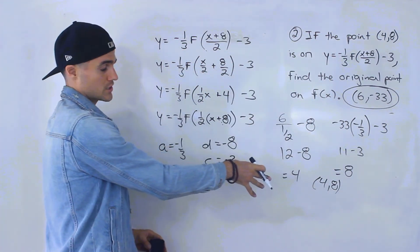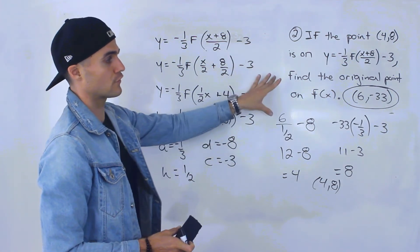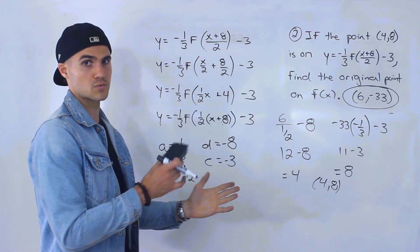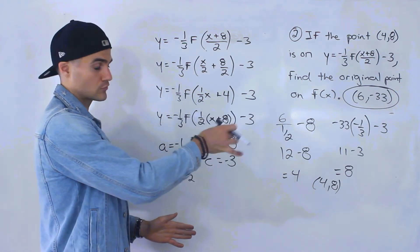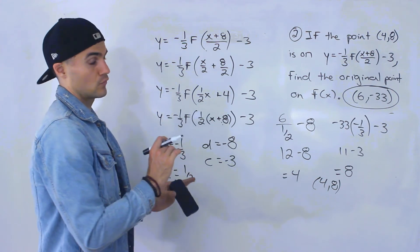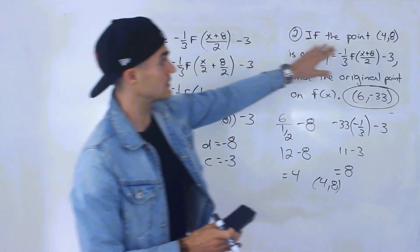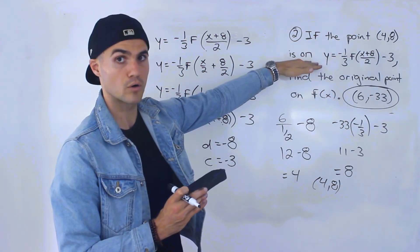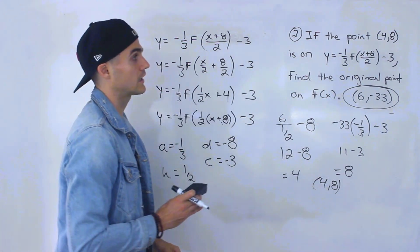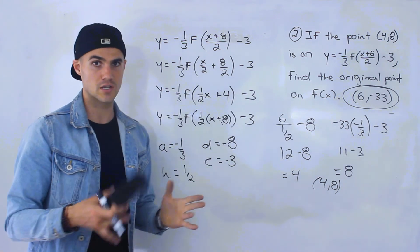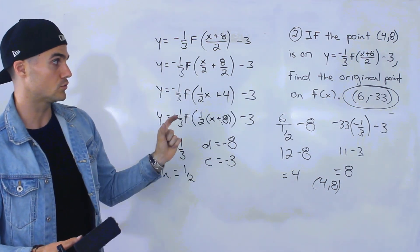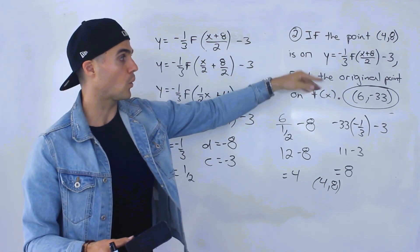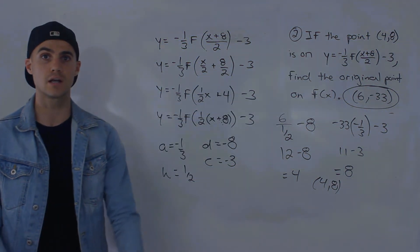Problem two is tougher than problem one because the algebra is harder and you have to work backwards rather than just applying the formula to one side. Be on the lookout for the differences — sometimes students see a point like (4, 8) and assume it's on f of x, but if you read carefully it's on the transformed function. Always check: is the point on f of x and we're finding the transformed point, or is it on the transformed function and we're finding the original?